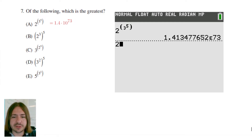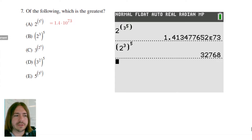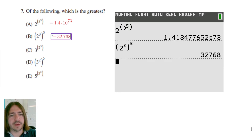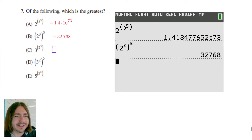The next one is two cubed to the fifth power, and that is going to be a relatively smaller number. That's 32,768 — so that's obviously not going to be our answer. Let's go on to the next one.